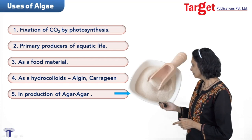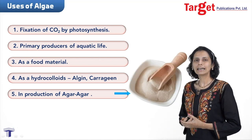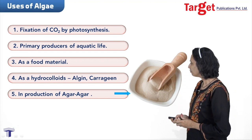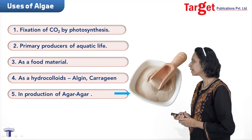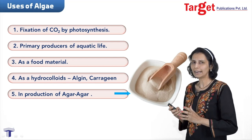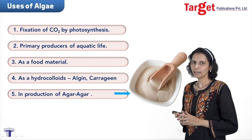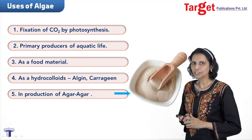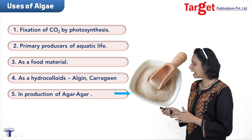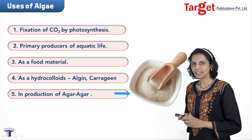Agar agar is used in the production of ice cream and jellies. There are numerous uses of agar agar — one of which is as a laxative. Another use is as a substitute for gelatin. Gelatin is animal-derived, so agar agar serves as a vegetative replacement for gelatin.